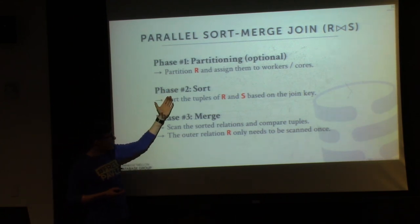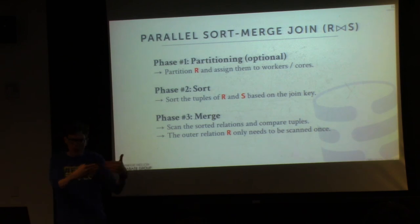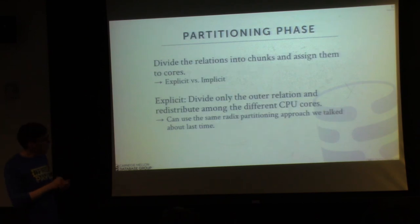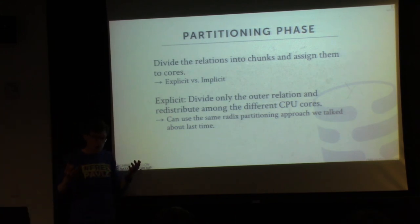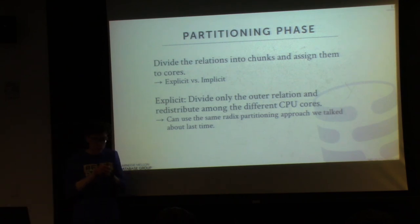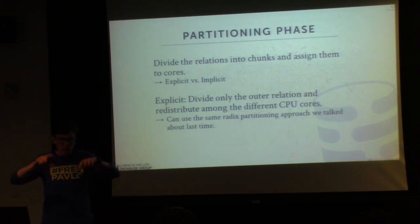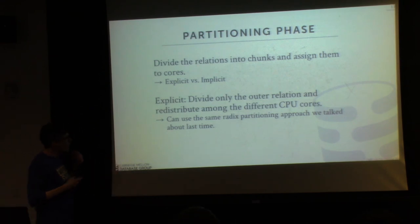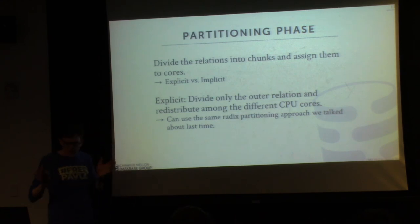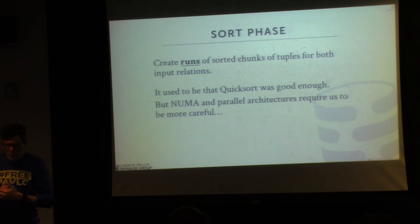We sort both inner and outer on the same key, then iterate over the two tables to do comparisons to see whether we have a match. The same radix partitioning we talked about last class is applicable here, and we can also rely on implicit partitioning if the data is already partitioned when loaded — as in the morsels case. Implicit partitioning means figuring out what key to use to split your tables when they get inserted and assigning them to different NUMA regions. We'll spend most of our time on the sort phase.